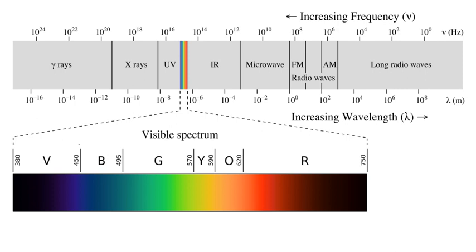Natural sources produce EM radiation across the spectrum. EM radiation with a wavelength between approximately 400 nm and 700 nm is directly detected by the human eye and perceived as visible light. Other wavelengths, especially nearby infrared longer than 700 nm and ultraviolet shorter than 400 nm, are also sometimes referred to as light.